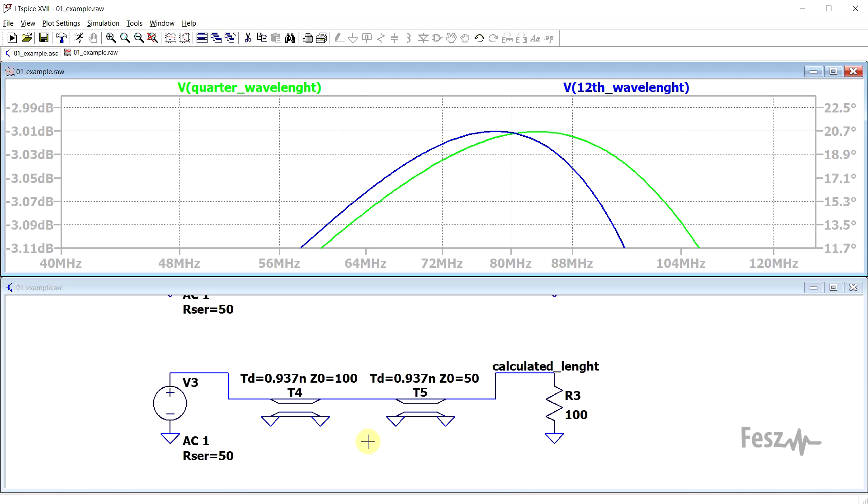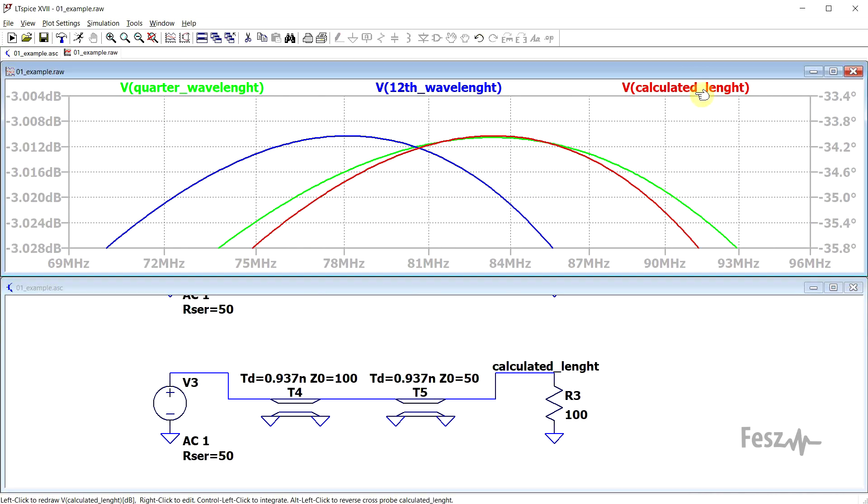If we do apply the formula, we get a length of 0.937 nanoseconds, and sure enough, if we check this circuit, this is the trace in red, we are getting the peak response at exactly the same frequency as we got it with the quarter wavelength transformer. So to get the best results with this type of structure, you need to apply the formula.